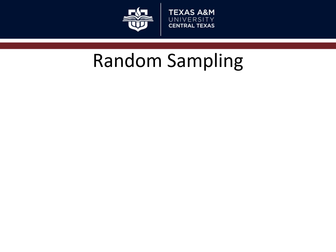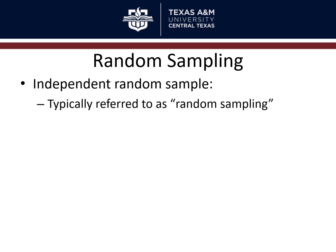To make this work, at least for theoretical models, we have to use random sampling — typically referred to as independent random sampling. It's usually shortened to just 'random sampling,' but there are two types: simple and independent. Typically when people say random sampling, they mean independent random sampling.